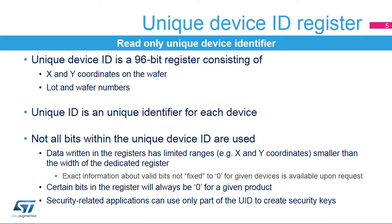The unique device identifier is a 96-bit register that contains the coordinates of the die on the wafer, lot number, and wafer number. This identifier is unique for each device manufactured by ST. As each record within the unique identifier has a given range, like the X and Y coordinates, not all the bits in the device ID are used. This is important for security-related purposes, where the number of bits used is an important parameter.